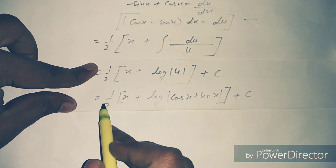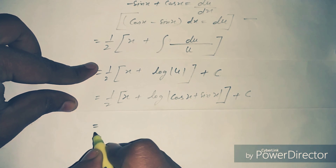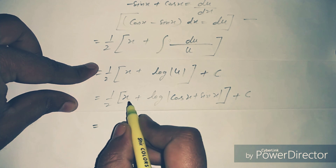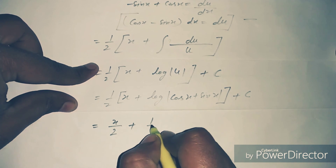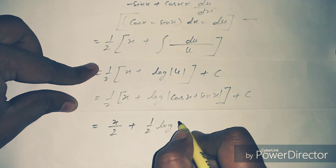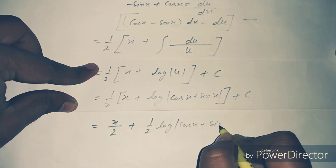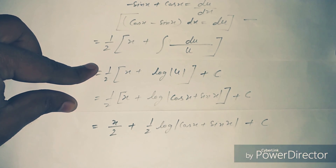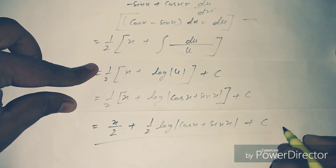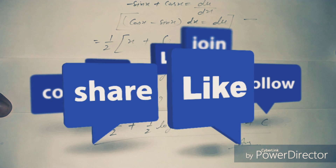Taking 1 by 2 inside the bracket and multiplying through, the final answer is x by 2 plus 1 by 2 log of cos x plus sin x plus C. Thank you my friend for watching this video — don't forget to like and subscribe to this channel.